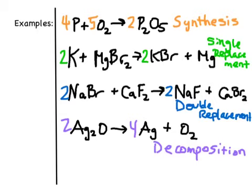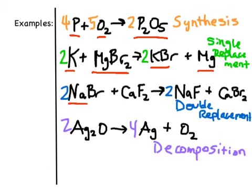Here are the answers, all balanced, with reaction types given. The first is synthesis — two things combining into one. The second is single replacement — an element and a compound switch, with K and Mg both being metals so they can replace each other. The third is double replacement — two compounds switching partners, keeping Na and Ca separate and swapping F and Br. The last is decomposition — one substance breaking apart into two or more smaller substances.